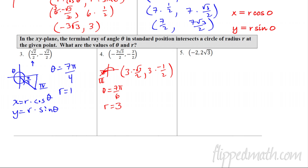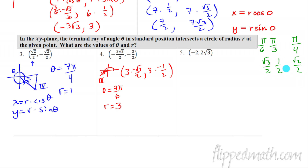For number five, remember we're only dealing with three reference angles from the unit circle: pi over six, pi over three, and pi over four — the 30, 60, and 45. These generate cosine and sine values of radical three over two, one half, and radical two over two. Looking at the y value, there's a radical three, suggesting radical three over two. The y coordinate is two radical three, so if I divide each coordinate by four, I get negative one half and radical three over two.